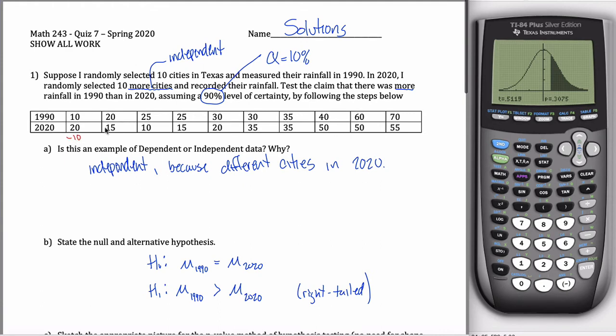I can change the two sets of data into a single set of data by doing 10 minus 20 gives me negative 10, 20 minus 15 gives me 5, 25 minus 10 is 15, 10, 10, 10, and 15.